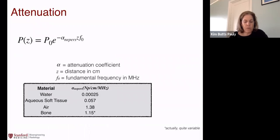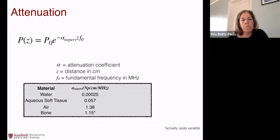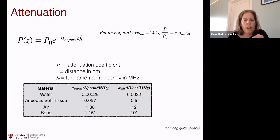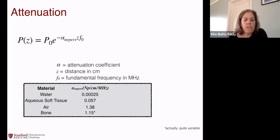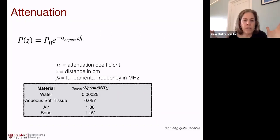So this is our attenuation equation. We have our pressure wave falling off exponentially, and now I've put the frequency dependence explicitly. Our attenuation is in Nepers, the coefficient is given in Nepers per centimeter per megahertz. You multiply times the depth to get how the pressure falls off, and you also multiply times your frequency. The table gives values for different materials: water has very low attenuation, aqueous soft tissue has a reasonable attenuation, and bone has much, much higher attenuation than aqueous soft tissue. When we think about the brain, we just think about it as aqueous soft tissue, and the skull is much higher. It's actually quite variable depending on the bone structure.